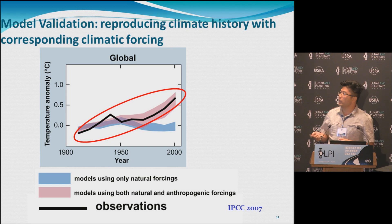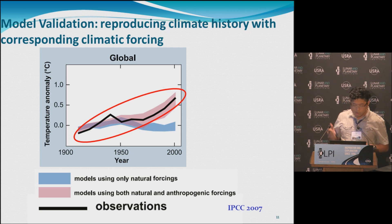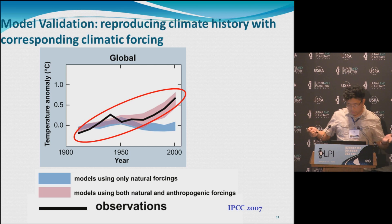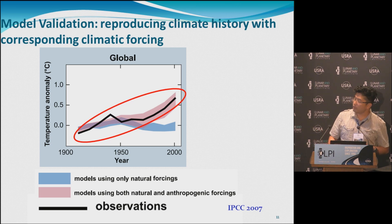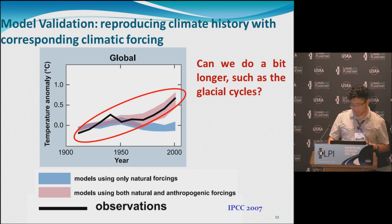So, model validation — what does that mean? For me, it's reproducing climate history with a corresponding climatic forcing. The black line is the observation and the red is the model with corresponding climatic forcing — it's pretty good. That shows the model has its merits. So can we do a little bit longer? This is only 100 years. Can we do glacial-interglacial cycles?